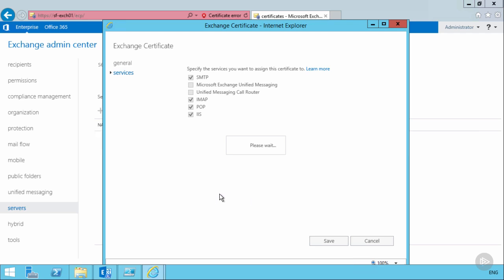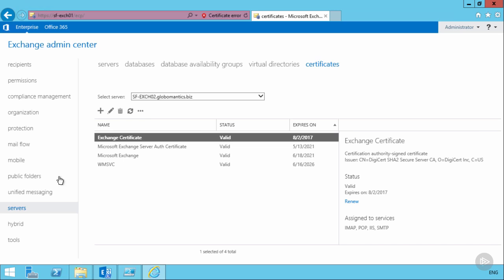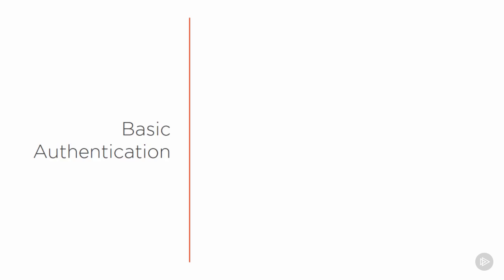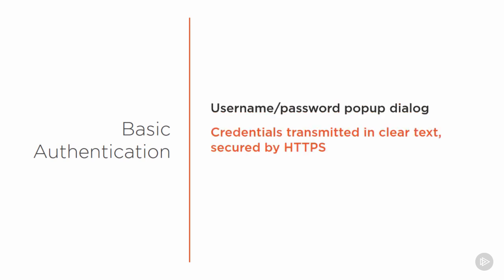Outlook isn't the only way users will connect to their mailboxes — they'll also frequently use Outlook on the Web. Let's look at the authentication settings for Outlook on the Web. The first option is basic authentication, where a username and password dialog pops up for users to enter credentials. Those credentials are transmitted in clear text, so the connection should be secured by HTTPS. Basic authentication is not very user-friendly and is not commonly used for Outlook on the Web these days.